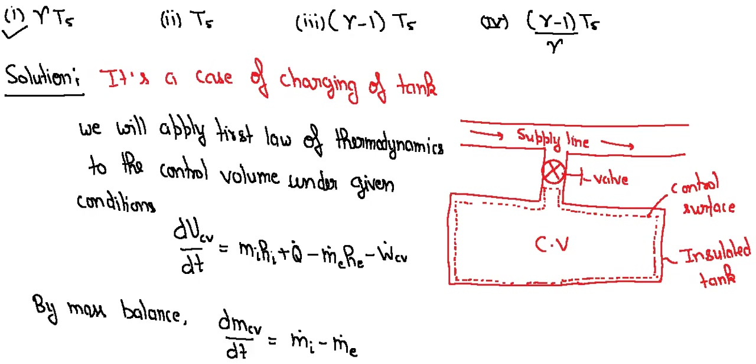We will simply apply first law of thermodynamics for unsteady state for open flow system. When change in kinetic and potential energies are zero, dUcv/dt equals mi dot hi plus Q dot minus me dot he minus Wcv.